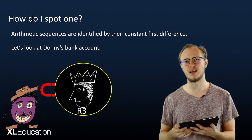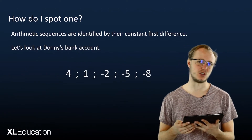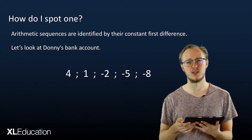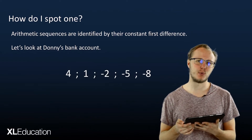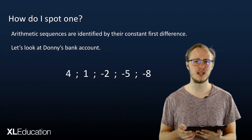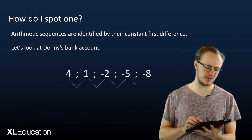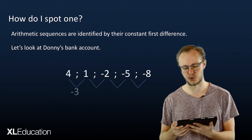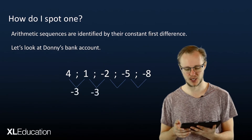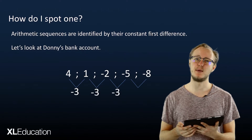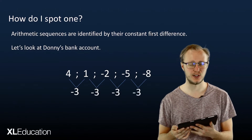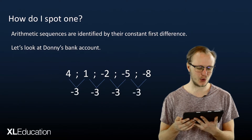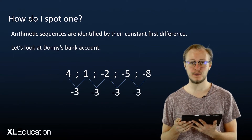Three rand every day goes out of his bank account. On day one Donnie had four rand. On day two he had one rand. On day three he owed the bank two rand. On day four he owed five rand. Looking at the differences: from term one to two we minus three, term two to three we minus three, and so on. That first difference is a constant minus three — that's how we know this is an arithmetic sequence.